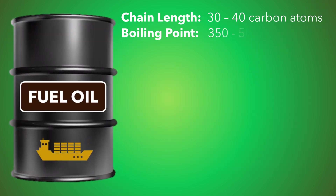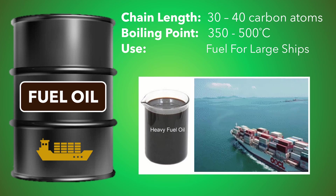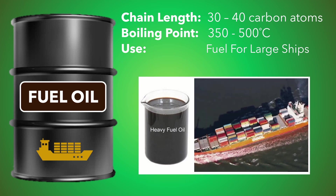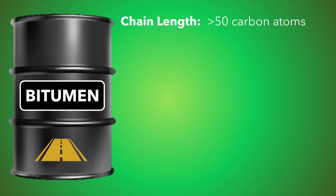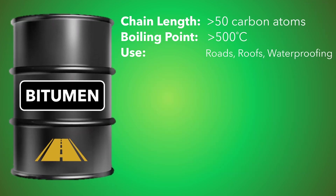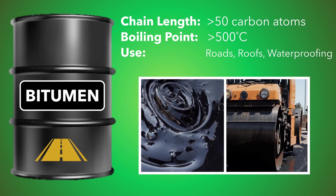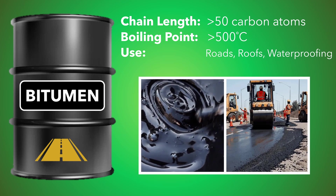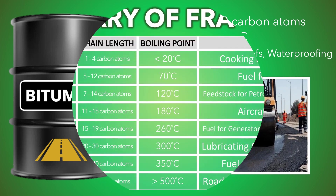Fuel oil is used in very heavy machinery or vehicles, like large ships. And finally, bitumen, which remains as a residue at the bottom of the fractionating column, is used for roads, roofs and waterproofing.